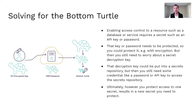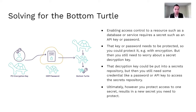If you think of turning on access control to a resource — be it a database or a service — that requires a secret such as an API key or password. That API key or password needs to be protected, so you can protect it with encryption. But then you still need to worry about the secret decryption key and how to secure that. You could put that into a secret store, but then you still need some other credential like a password or API key to access that secret store. However you end up protecting access to that secret results in yet another secret. Secret stores are great, but they present a challenge once you have to prove who you are to enter the secret store and unseal something from there.